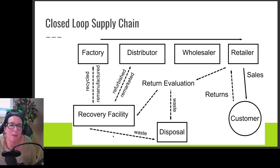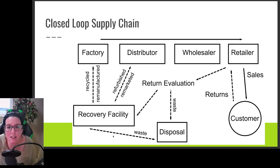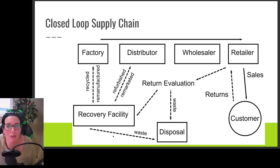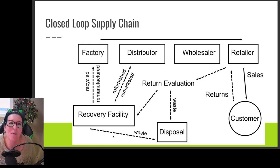This reverse logistics involves additional companies as part of the supply chain. We might have a recovery facility, a disposal facility, and a third party doing evaluations of returns. As we talked about with Amazon returns — they get sold to a third party who is going to sell them, like that crazy bins concept — so now we have more companies involved as they become the new distributors, wholesalers, and retailers for that supply chain.